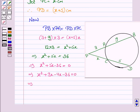Taking x common from the first two terms, we have x into x plus 9. Taking x plus 9 common from the last two terms, we have minus 4 into x plus 9 is equal to 0.